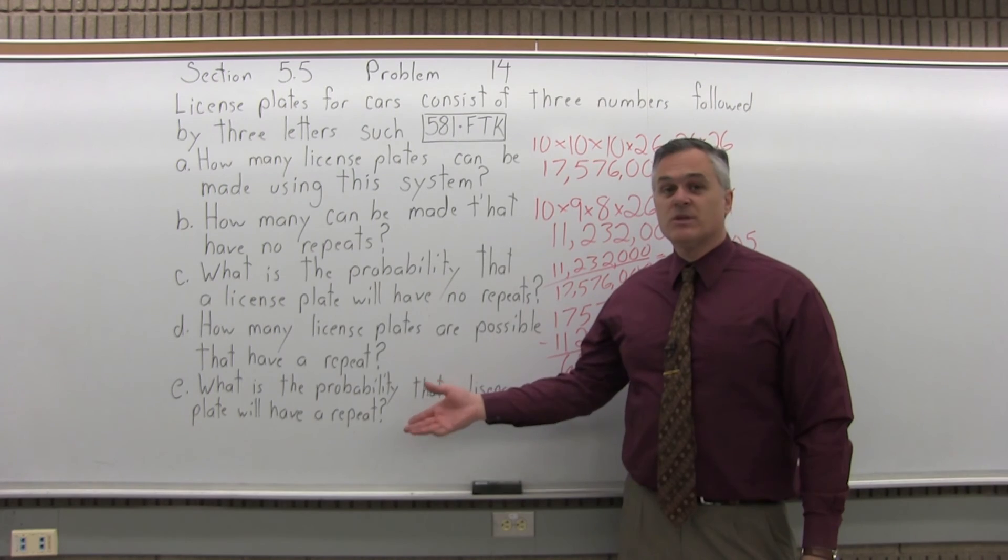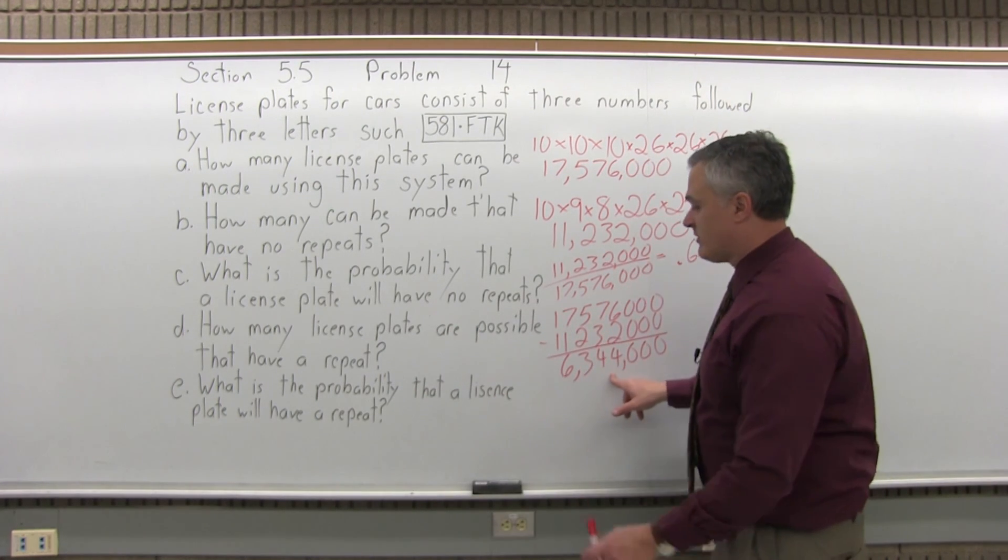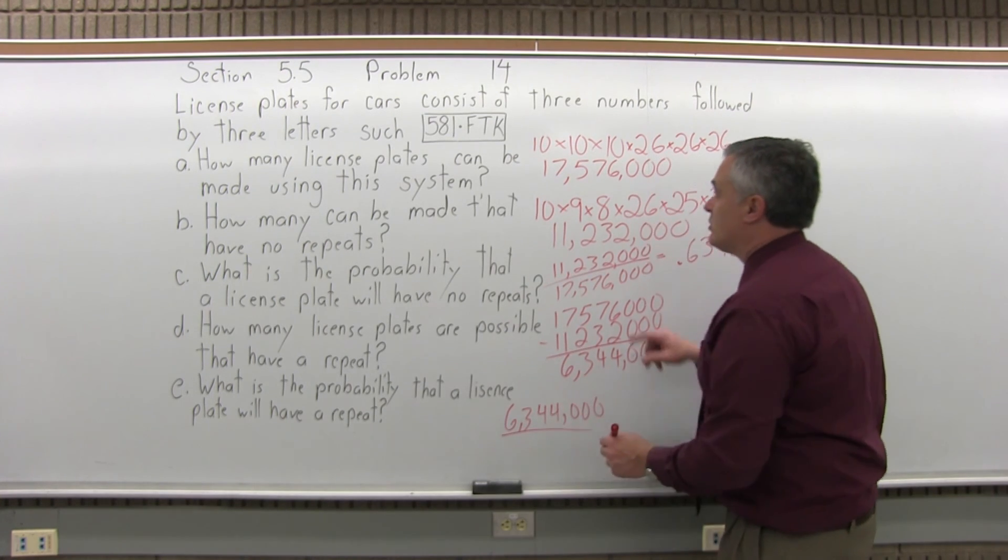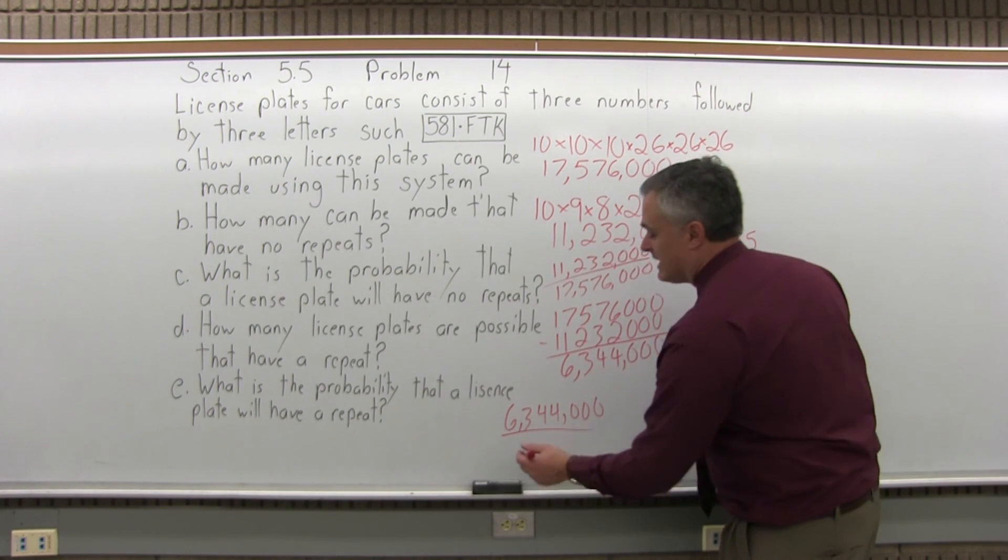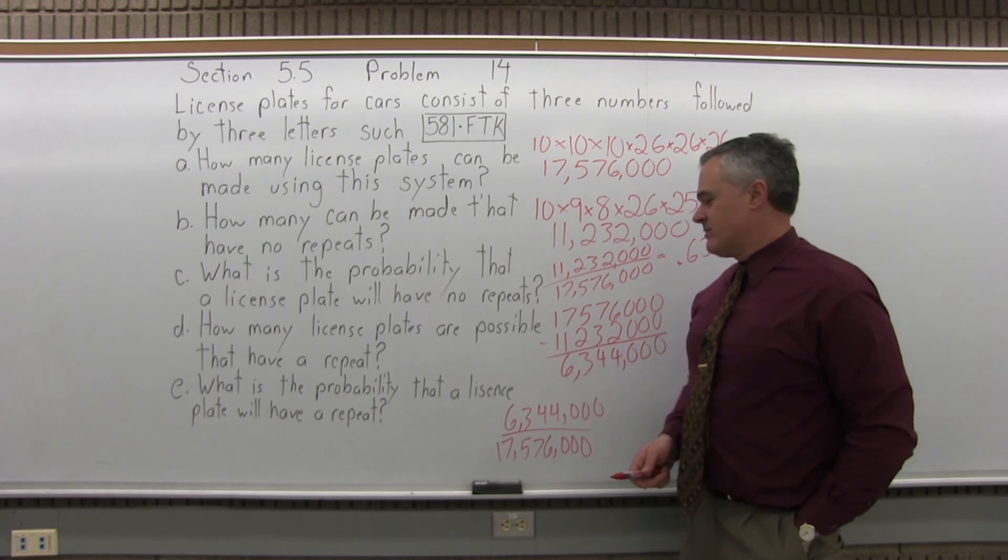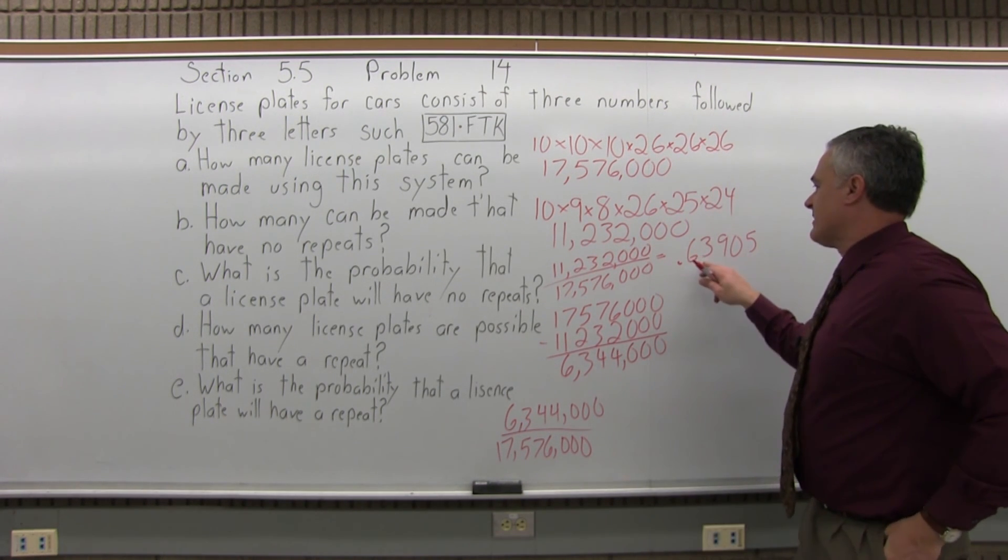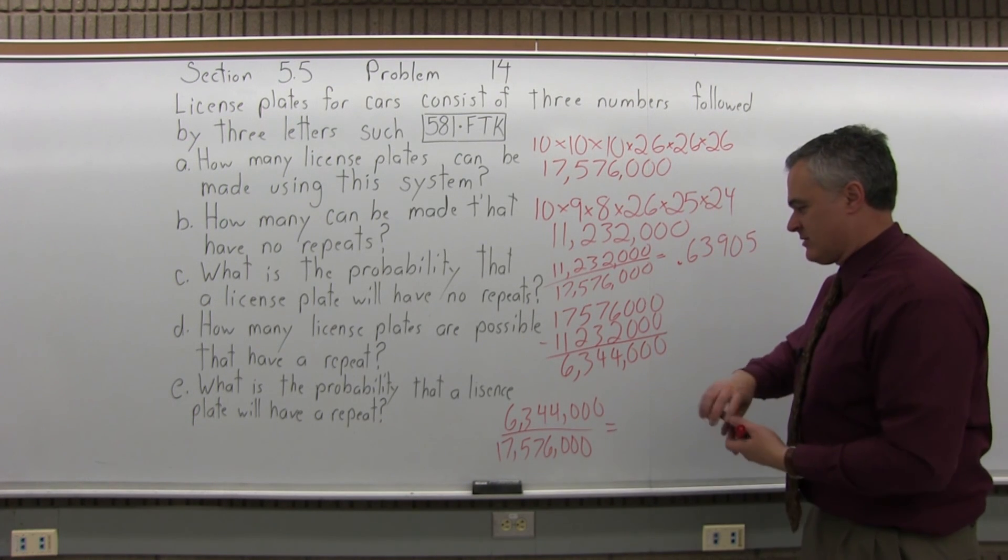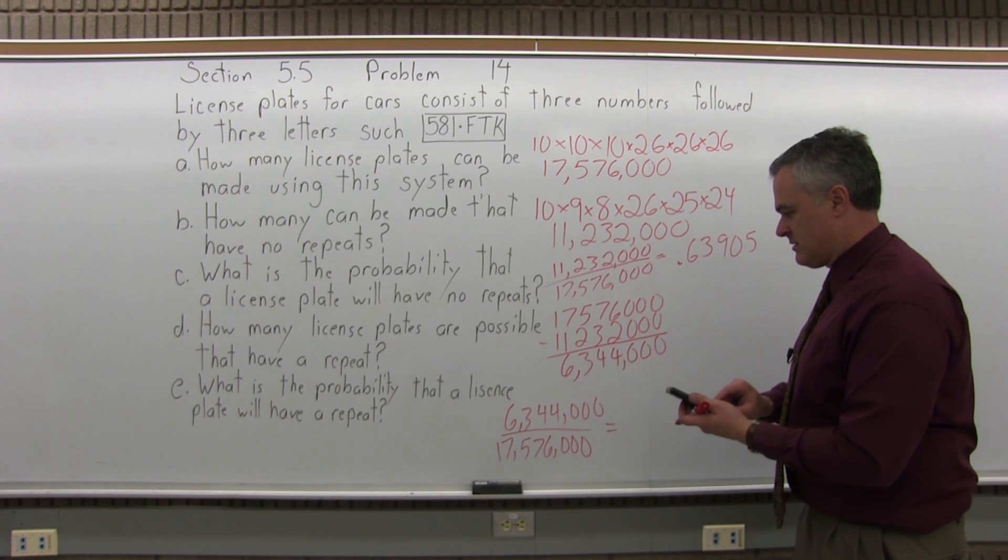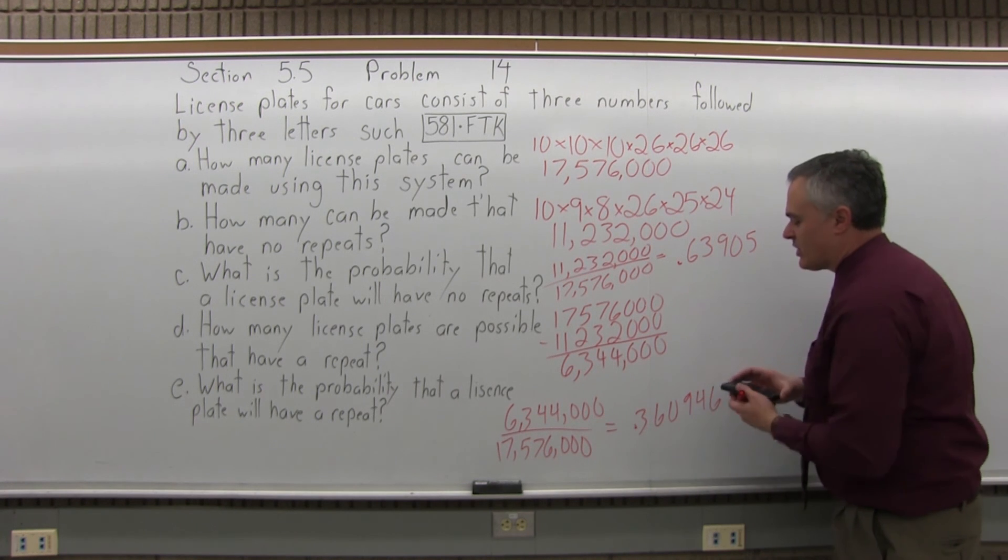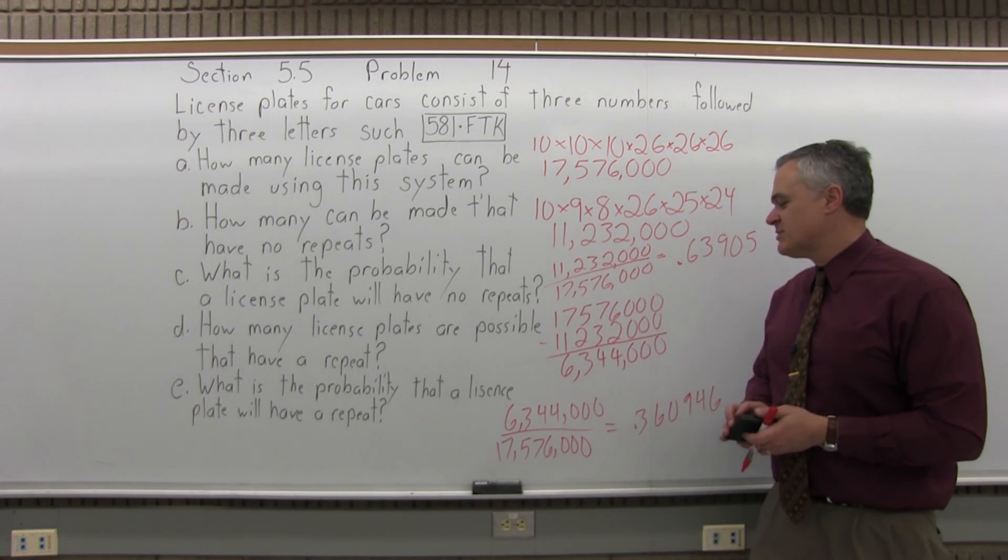The last part, part E, what's the probability that your license plate would have a repeat in it? It's the number of license plates with a possible repeat, 6 million, a little bit more, divided by the total number of license plates possible, a little over 17.5 million. I don't have a trick to divide that out. I can estimate it based on the fact that I know this is about 64%. This should be pretty close to 36% because they should add up to a total of 100%. Let's let the calculator do that for me. It does come out to 0.360946, and it goes on and on. Almost 0.361, a little more than the 36% probability.